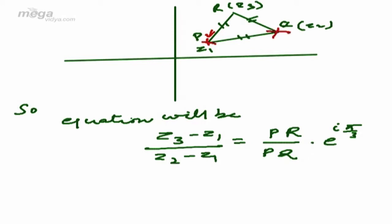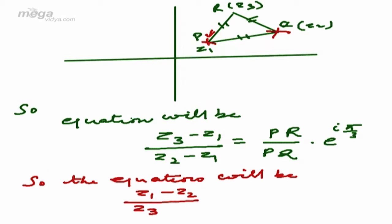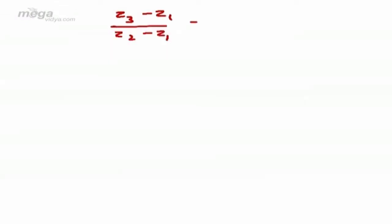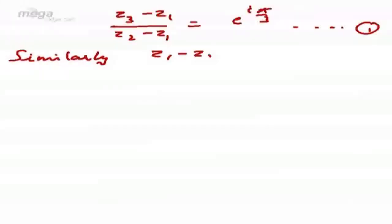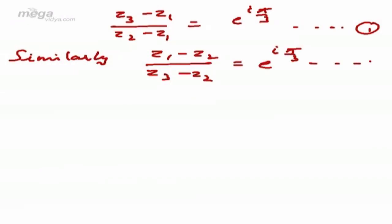Now let us apply Euler's theorem at point Q. We rotate the vector QR anti-clockwise to reach the new position QP. The equation will be (Z1 - Z2)/(Z3 - Z2) = (PQ/RQ) · e^(iπ/3). Since PQ = RQ in an equilateral triangle, we get: (Z3 - Z1)/(Z2 - Z1) = e^(iπ/3) as equation 1, and (Z1 - Z2)/(Z3 - Z2) = e^(iπ/3) as equation 2.